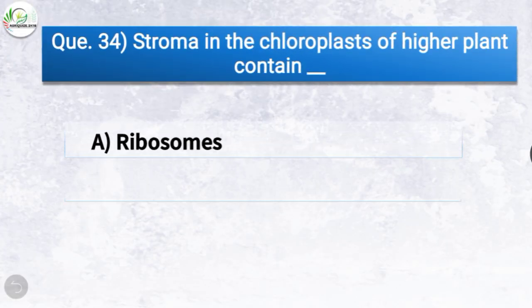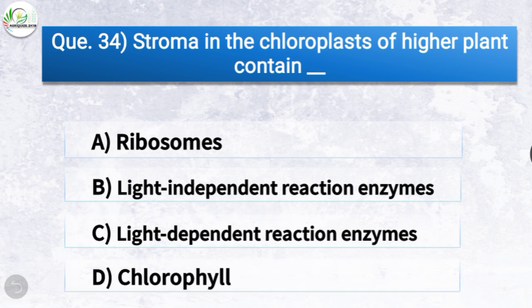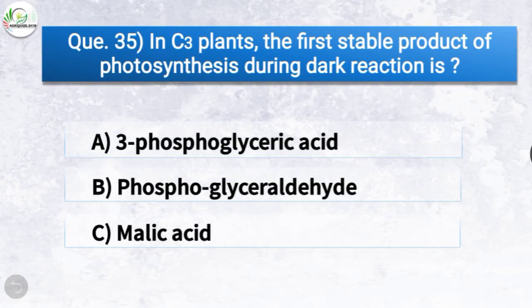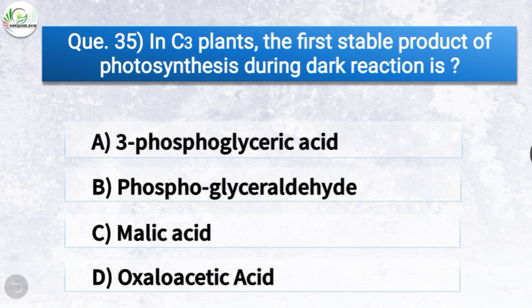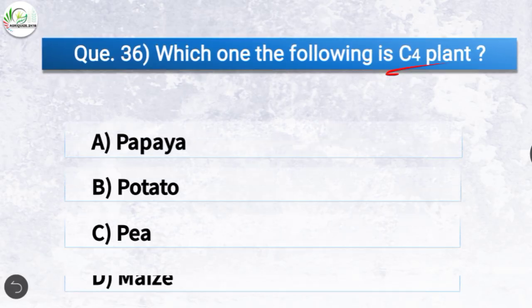Question 34: Stroma in the chloroplasts of higher plants contains what? Options: ribosomes, light-independent reaction enzymes, light-dependent reaction enzymes, or chlorophyll. The correct answer is option B — light-independent reaction enzymes. Question 35: In C3 plants, the first stable product of photosynthesis during the dark reaction is 3-phosphoglyceric acid. Question 36: Which one of the following is a C4 plant? The correct answer is option D — maize.